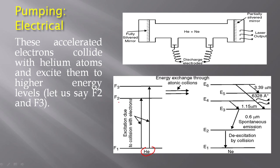The higher energy levels are called F2 and F3. Whenever fast-moving electrons from the electric discharge collide with Helium atoms in the ground state, the electrons transfer their energy to the Helium atom after collision, and due to this gain of energy, Helium will be excited to the F2 and F3 levels.